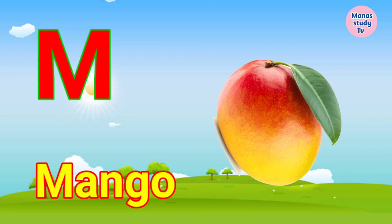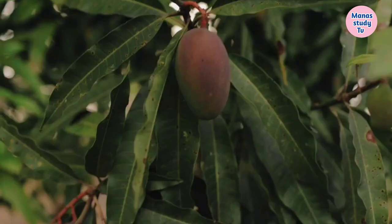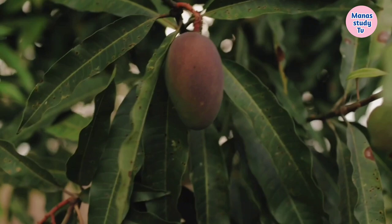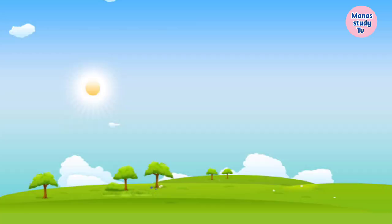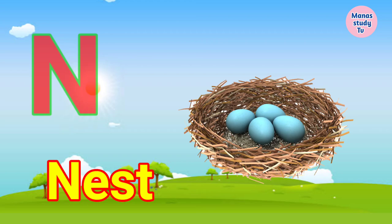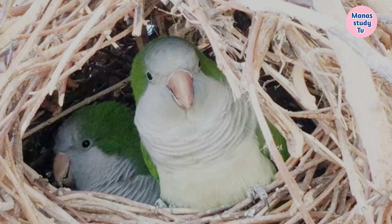M. M for Mango. Mango means Aam. N. N for Nest. Nest means Ghosla.